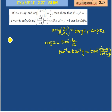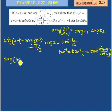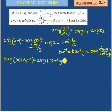Given: argument of (Z minus 1) divided by (Z plus 1) equals π/2. Applying the first formula: argument of (Z minus 1) minus argument of (Z plus 1) equals π/2. Substituting Z = X plus iY: argument of (X plus iY minus 1) minus argument of (X plus iY plus 1) equals π/2.